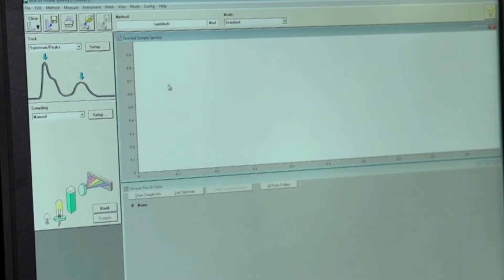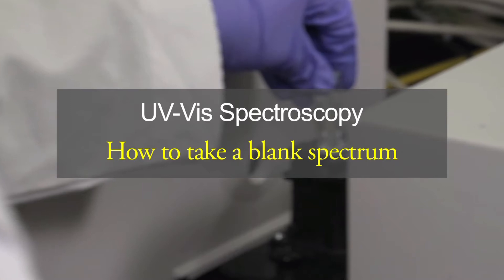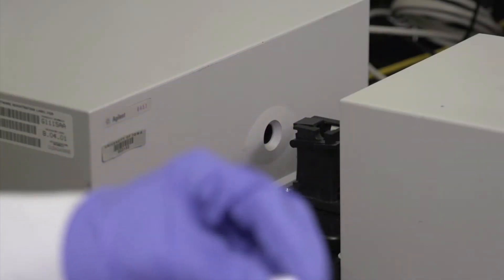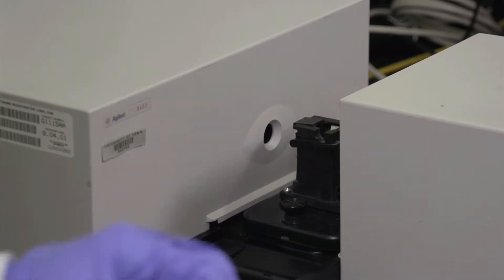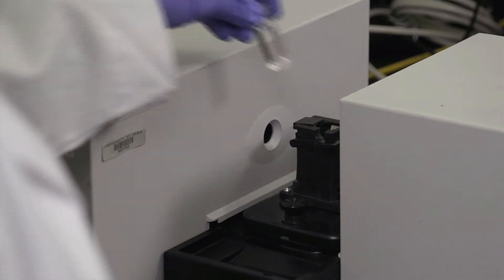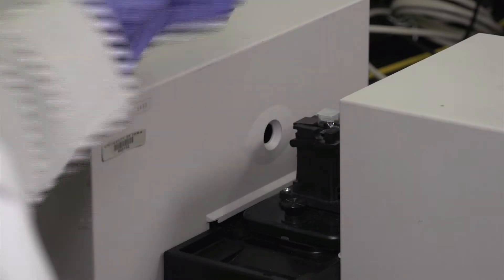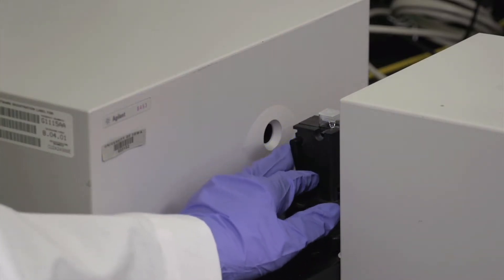Now we're ready to take the blank spectrum. Fill the cuvette with double distilled water for the background. And it should be about two thirds of the way full. And then we're ready to place it in the sample compartment. So ensure that the arm is up so that you can put the cuvette in the compartment. And then place the cuvette in and press the arm down to lock it into place. Now we're ready to take the blank spectrum.